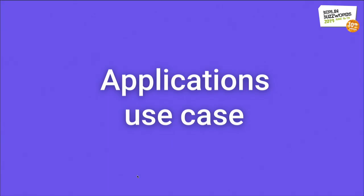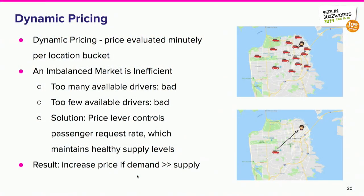On the application use case side, a specialized example is dynamic pricing. Dynamic pricing means the price can change at a given location and time depending on contextual information — supply and demand — which are continuously evaluated. If the market isn't balanced, it's not good for drivers or passengers: you may not get a car if there's too much demand, there are long wait times, and drivers have no reason to fill the demand shortage if they get paid the same price. So price is the lever to bring this into balance.